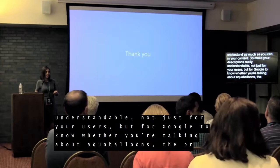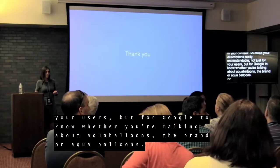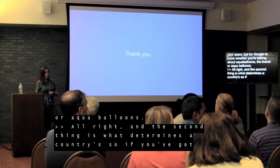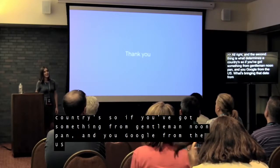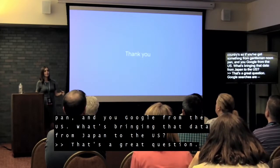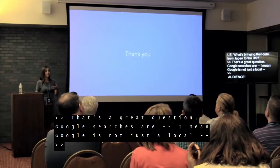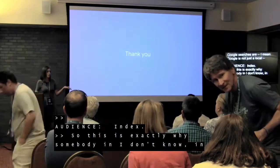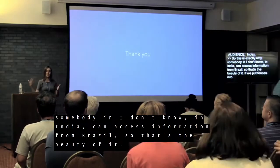Follow-up: what brings a foreign country's listing up on a U.S. Google search? Google is universal — someone in India can access information from Brazil. We don't put fences on it; doing so would cut access to information. Also, search results do depend somewhat on the device you're using.